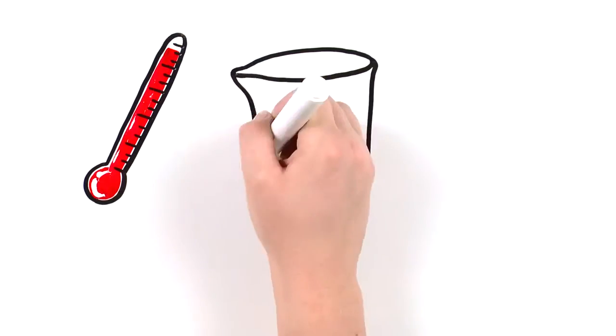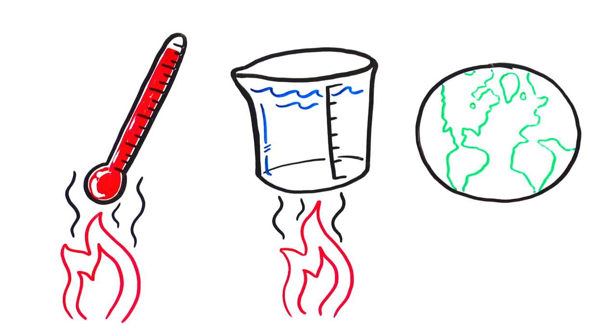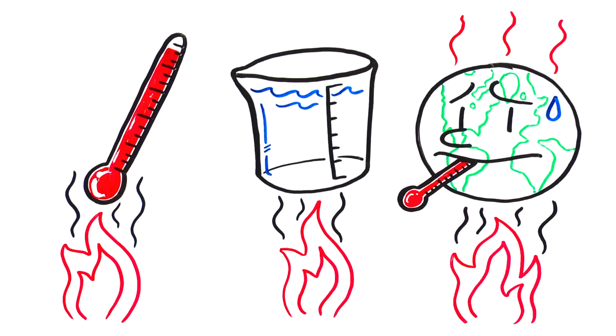Just like mercury in a thermometer, water expands when it's heated, and Earth's ocean is taking in more than 90% of the heat from global warming. That's a lot.